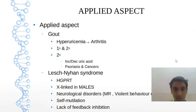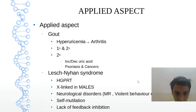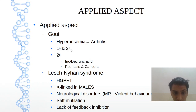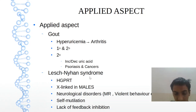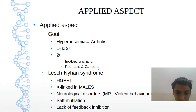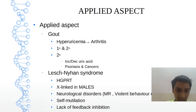Now the applied aspect. We have gout and Lesch-Nyhan syndrome. In gout, that is hyperuricemia leading to arthritis, we have primary and secondary gout. Secondary gout shows fluctuated levels of uric acid observed in psoriasis and cancers. Lesch-Nyhan syndrome is caused by HGPRT deficiency — hypoxanthine-guanine phosphoribosyltransferase deficiency.